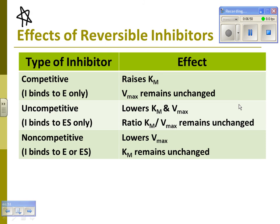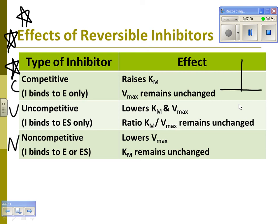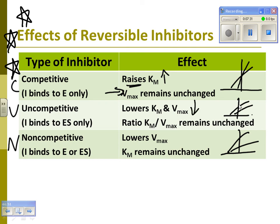Mix that with the inhibition summary chart — be able to do the entire chart. It always goes C-U-N: competitive intersects on the y-axis, uncompetitive lines are parallel, non-competitive starts at the same x-intercept. For the arrows: competitive has KM up, Vmax unchanged. Uncompetitive has both KM and Vmax down. Non-competitive has KM unchanged, Vmax down. Also know where the inhibitor binds: competitive binds the enzyme only; uncompetitive binds the enzyme-substrate complex; non-competitive binds both.